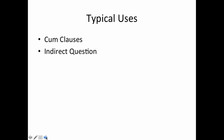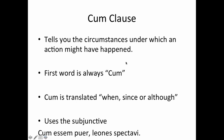There are two typical uses we're going to talk about. First is a cum clause — this tells you the circumstances under which an action might have happened. The first word is always going to be the word cum, and it's going to be translated 'when,' 'since,' or 'although.' The verb is always going to use the subjunctive. Here's an example: cum essem puer, leonis spectavi — 'When I was a boy, I watched the lions.'